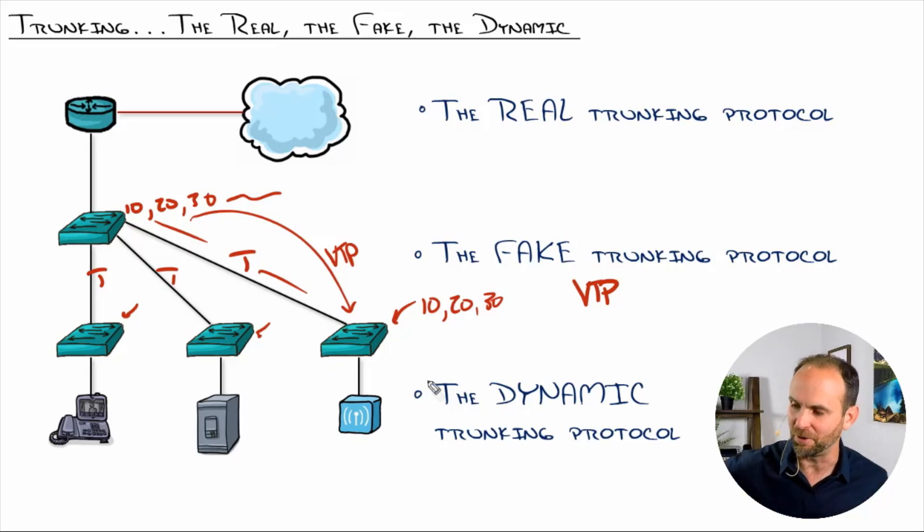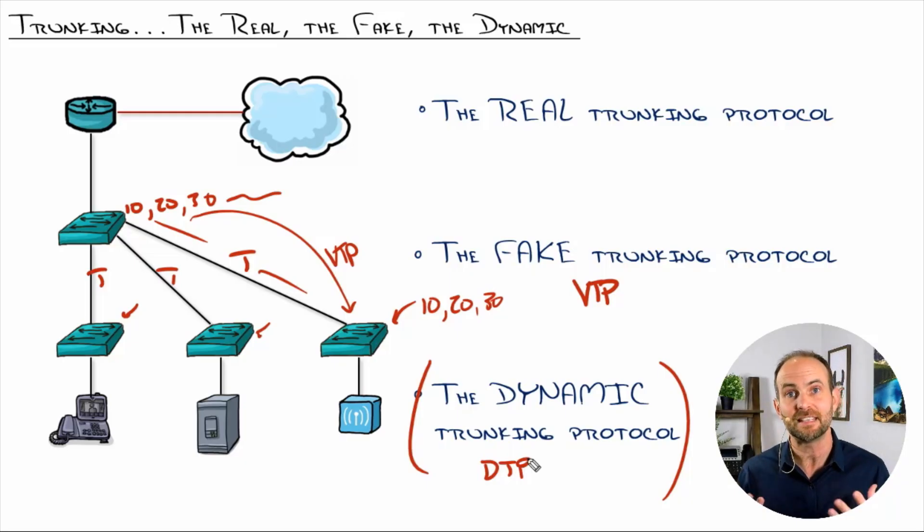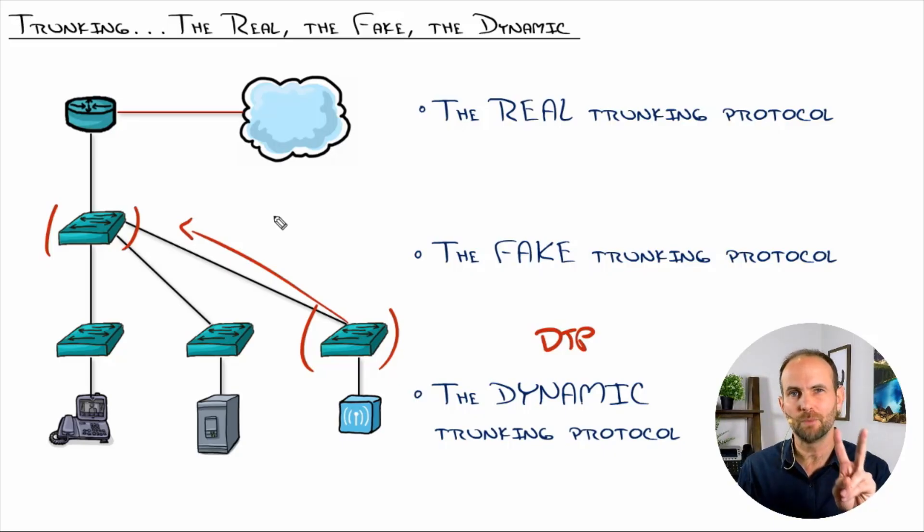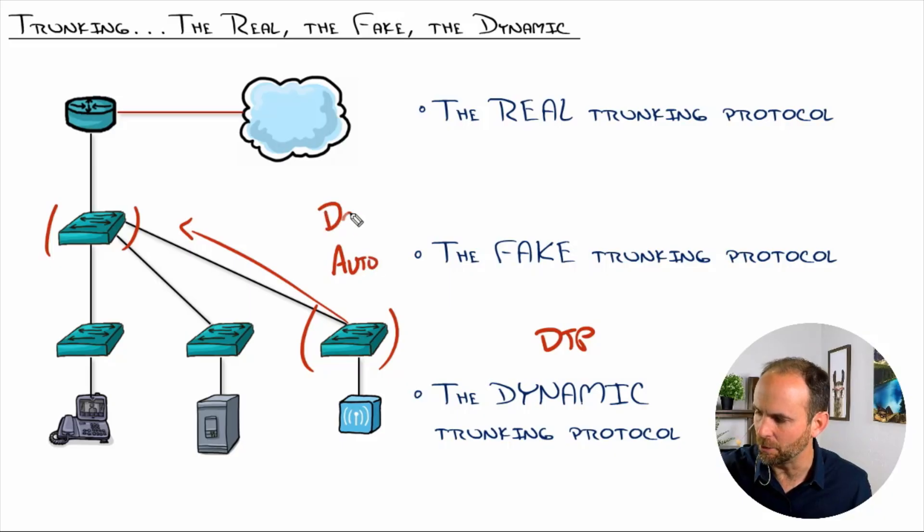Last thing, the dynamic trunking protocol. This guy right here, DTP, is another Cisco creation that was designed to make things easy, but in the end, made things kind of hard. And that is at least for you and I to remember. DTP allows the switches to negotiate and configure trunks on their own, right? Switches can recognize switches if you're using DTP, and that allows them to say, hey, I'd like to be a trunk. It's because DTP has two major modes, auto and desirable, right? I'll just put auto and desire. Auto mode sits there and passively waits for somebody to try and be a trunk.